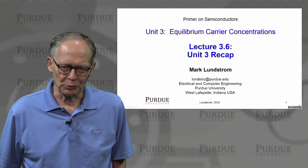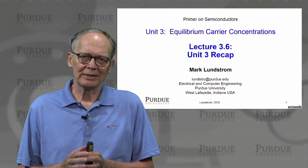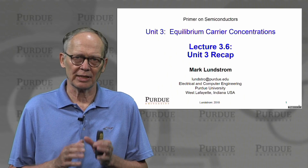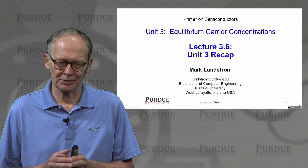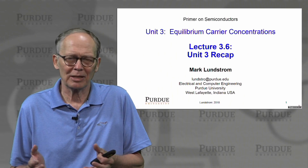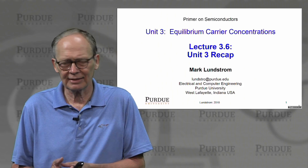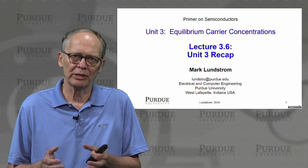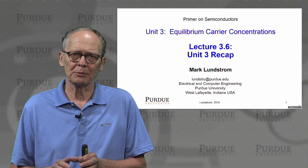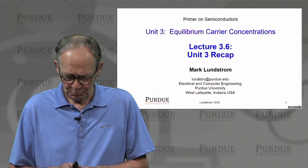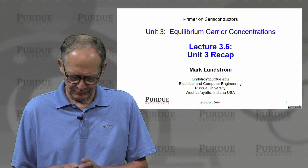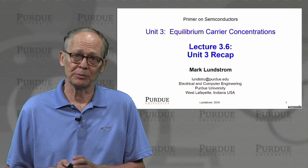It's time to wrap up Unit 3. In Unit 3 we've been discussing how we compute equilibrium concentrations of electrons and holes in a semiconductor. By equilibrium we mean the semiconductor is just sitting there — no voltages have been applied, we're not shining light on it. It's not the condition we're interested in when we think about semiconductor devices, but it's a good starting point for understanding devices. I'd like to summarize in this lecture some of the key points we should take away from this unit.